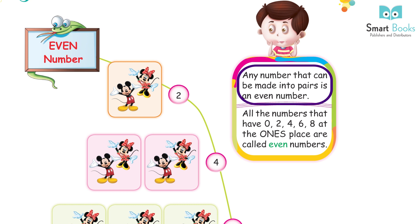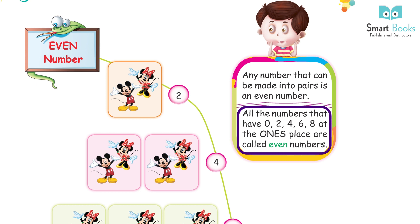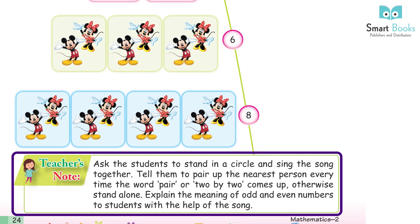Even numbers: any number that can be made into pairs is an even number. All numbers that have zero, two, four, six, or eight at the ones place are called even numbers.